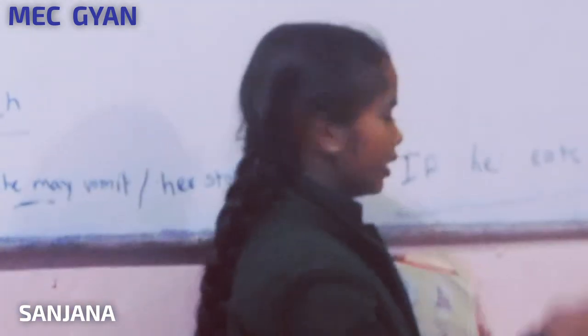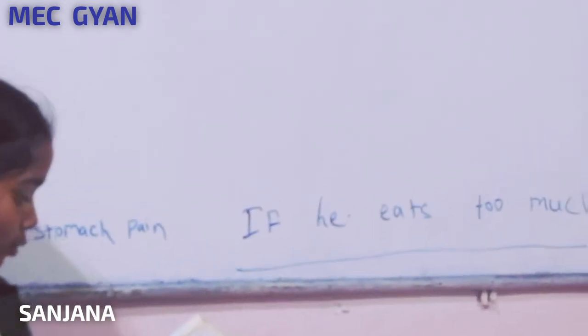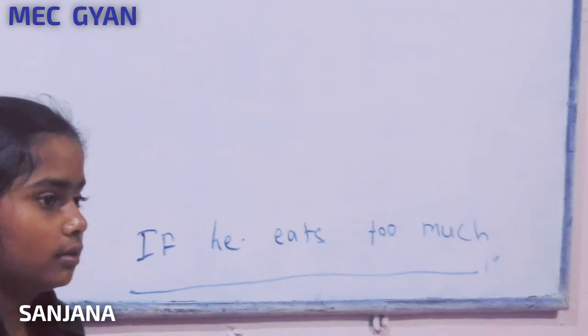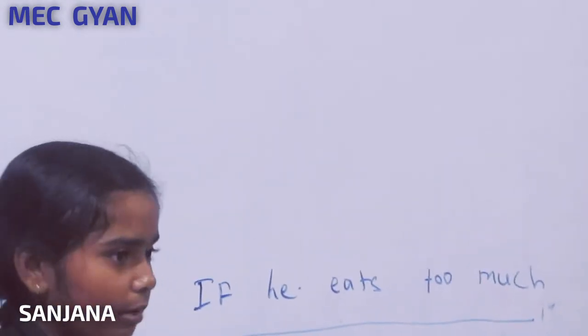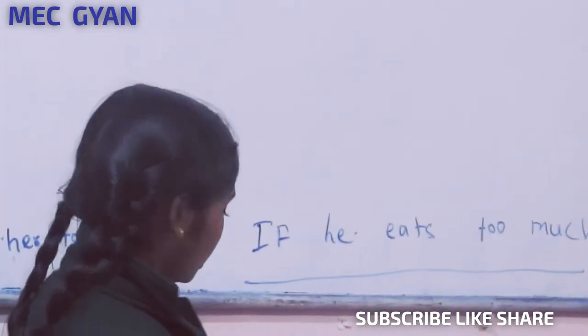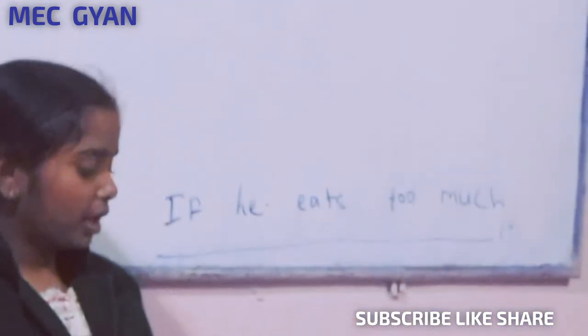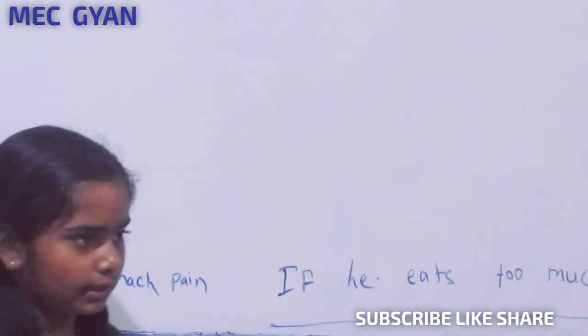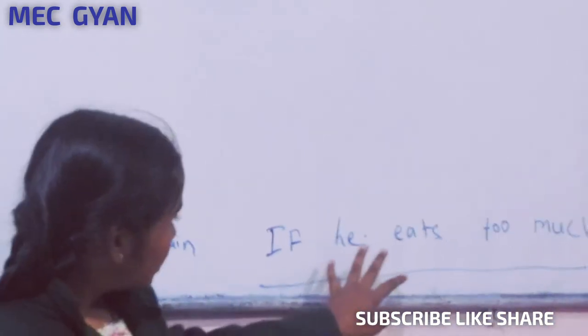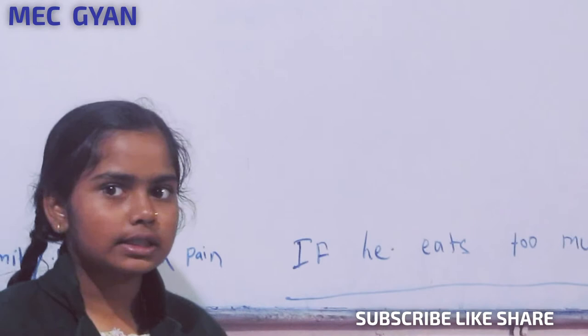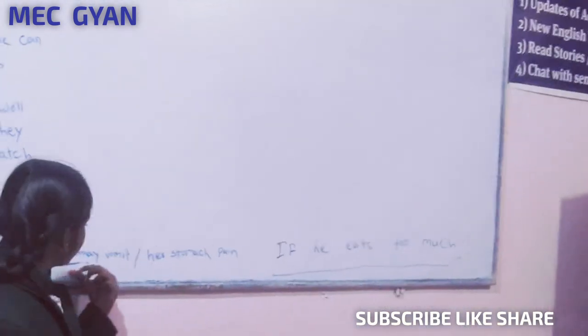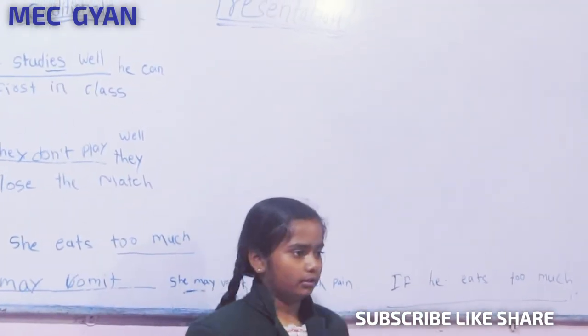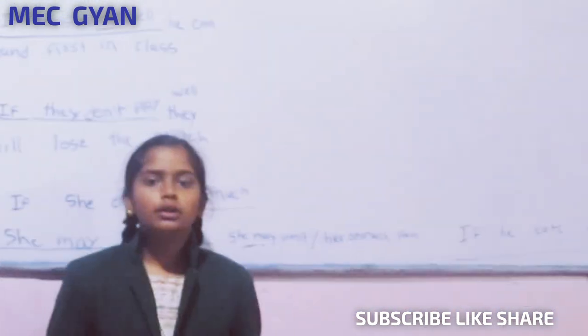I have written one question here: if he eats too much, what do we use? Your answer is right, but if this kind of question comes, you have to write 'his stomach will pain' if he is eating very much or out of control. There are two ways: if she is eating too much she may vomit, or his stomach will pain — both answers are the same, but 'his stomach will pain' is more better. In the next class we will learn more.